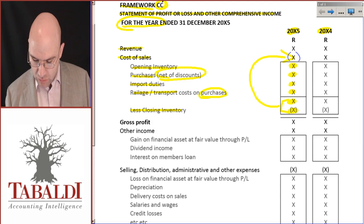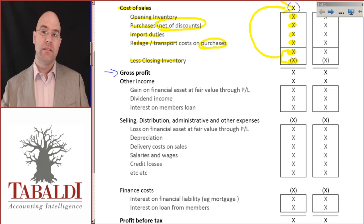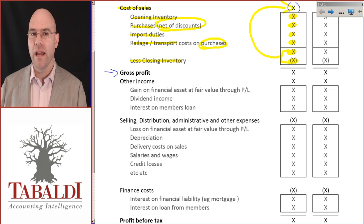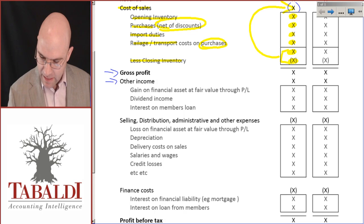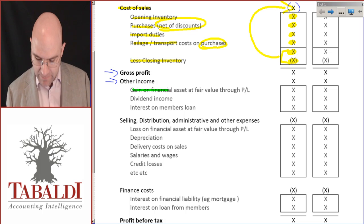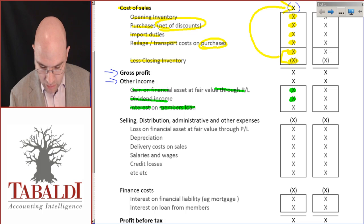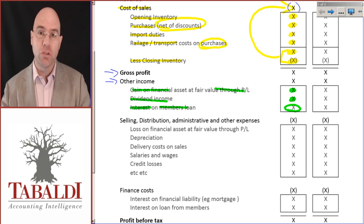Revenue less cost of sales gives me gross profit. If we are doing the statement of profit or loss with expenses by function only — it's very unlikely you'll get expenses by nature; look back to study unit one for that. Then other income: the ones common in this module are gains on financial assets at fair value through profit or loss, dividend income on investments in shares, and interest on members' loans — where you've loaned money to a member, making it an asset.